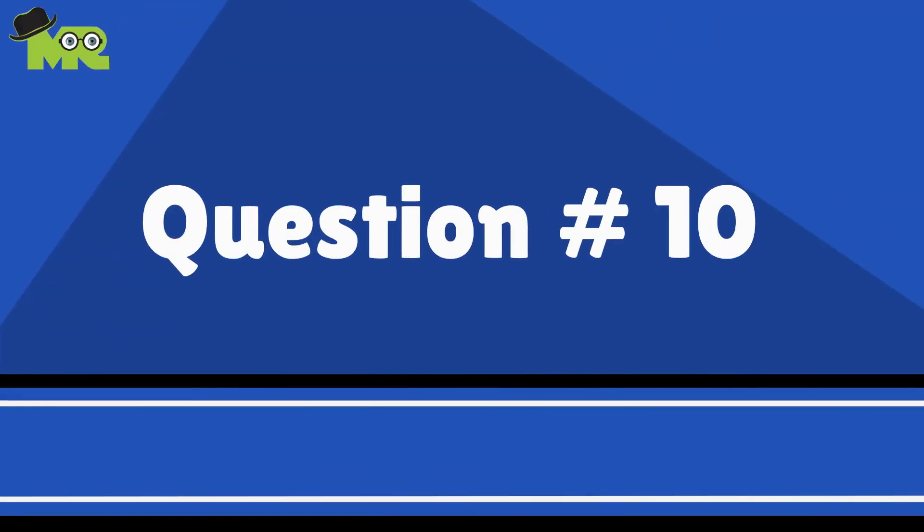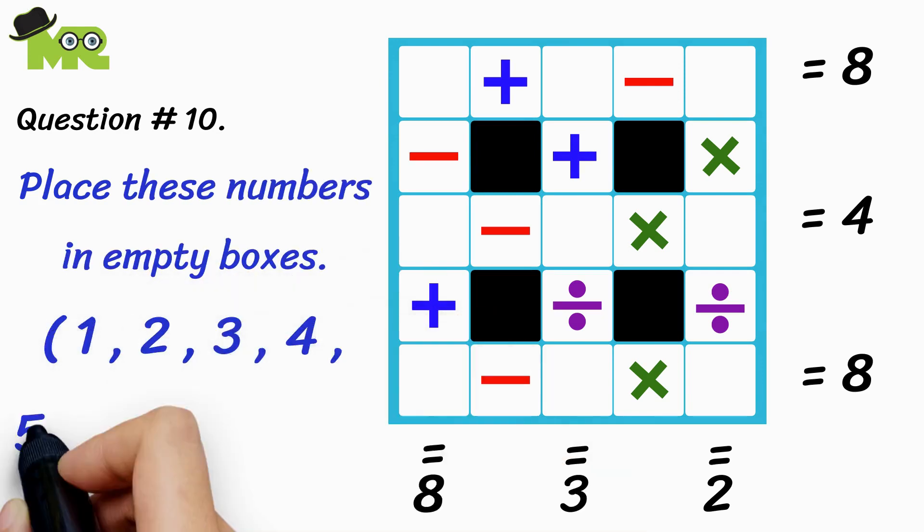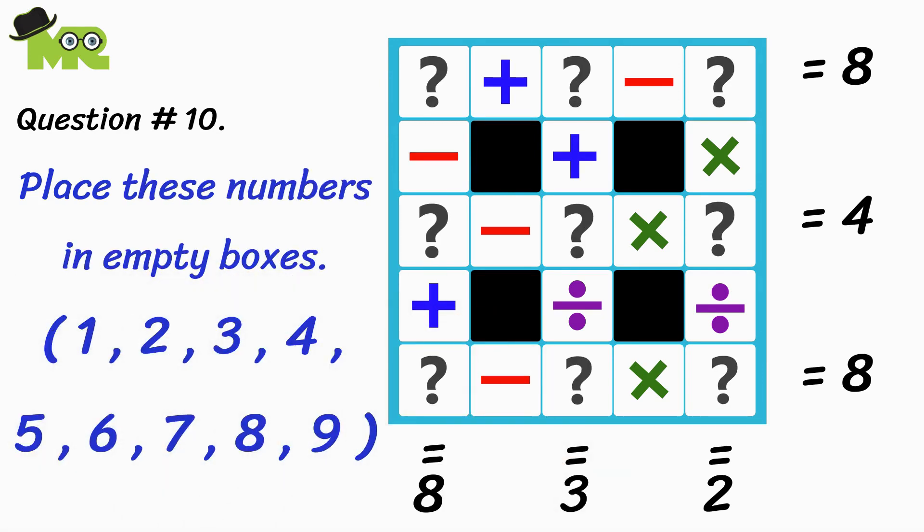Let's go to question 10. Can you place the numbers 1, 2, 3, 4, 5, 6, 7, 8, and 9 into these nine empty boxes in a way that your answer could equal 8 in this direction, 4 in this direction, 8 in this direction, 2 in this direction, 3 in this direction, and 8 in this direction.